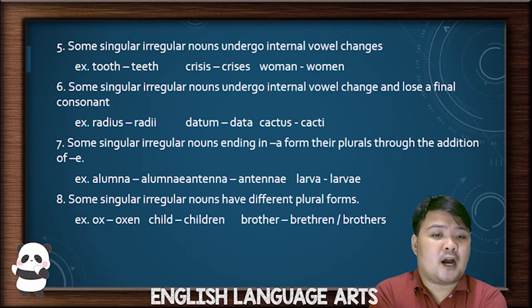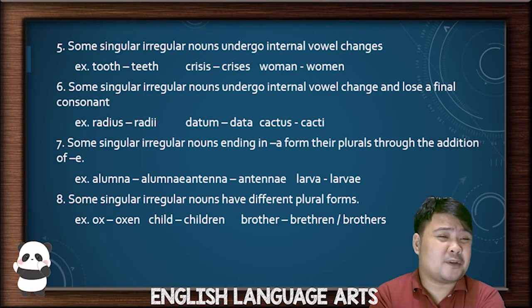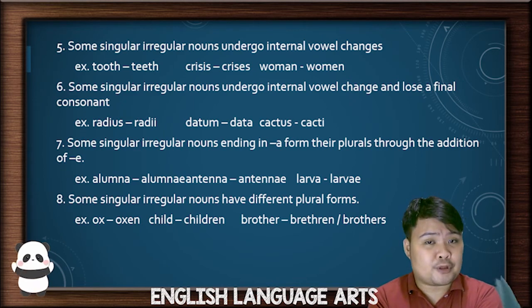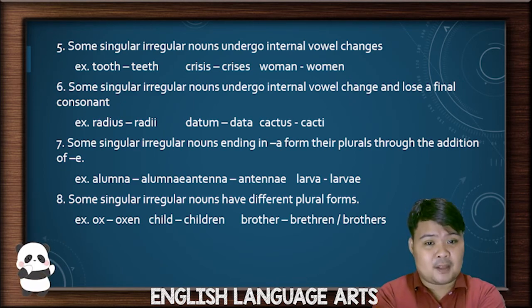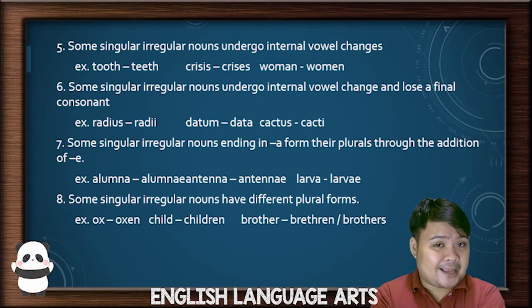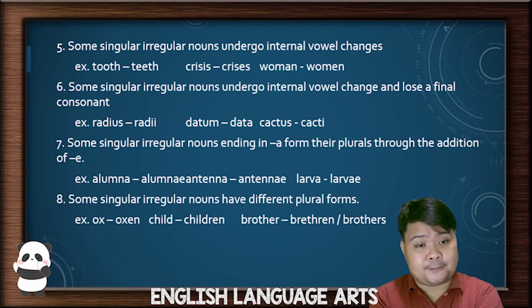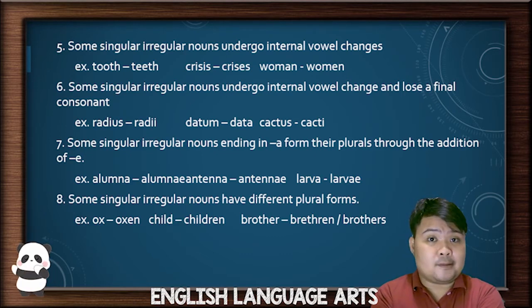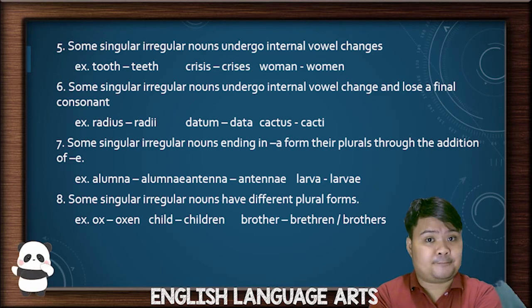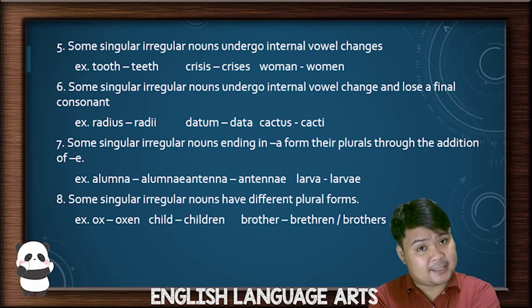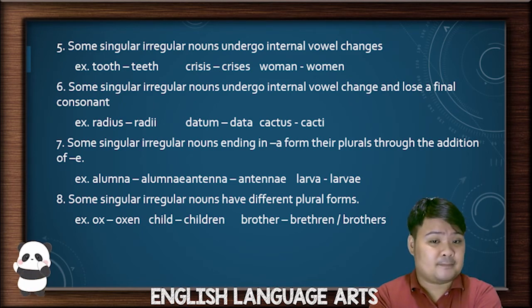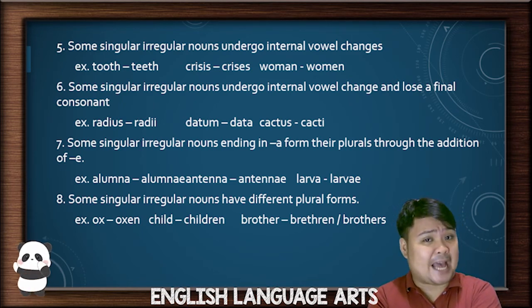Some irregular nouns undergo internal vowel changes. For example, tooth changes the two O's to two E's to become teeth. The plural of price changes the last I to an E. Woman changes the A to an E to become women. And sometimes you really have to make big changes — radius becomes radii, datum becomes data, and cactus becomes cacti.